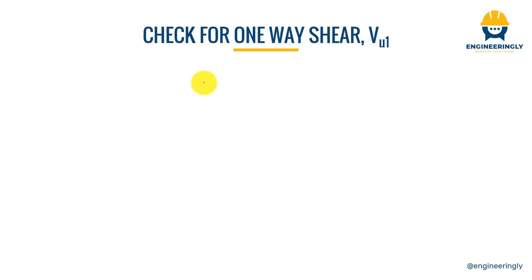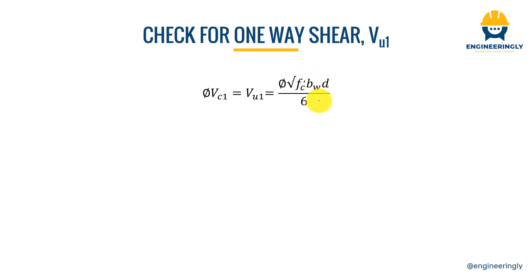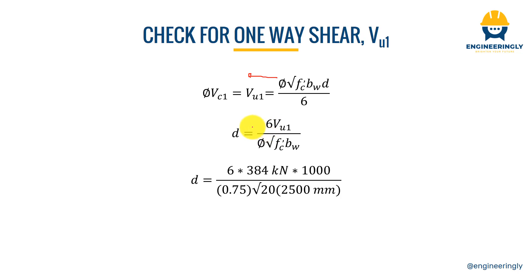The ACI formula for one-way shear capacity is: φVc = φ × (5√f'c × b × d) / 6, in SI units, where f'c is in megapascals, b and d are in millimeters, and φ = 0.75 for shear. Rearranging to solve for d, the required depth for one-way shear is 274 millimeters. Since we have provided 517 millimeters, the one-way shear check is satisfied with ample margin.